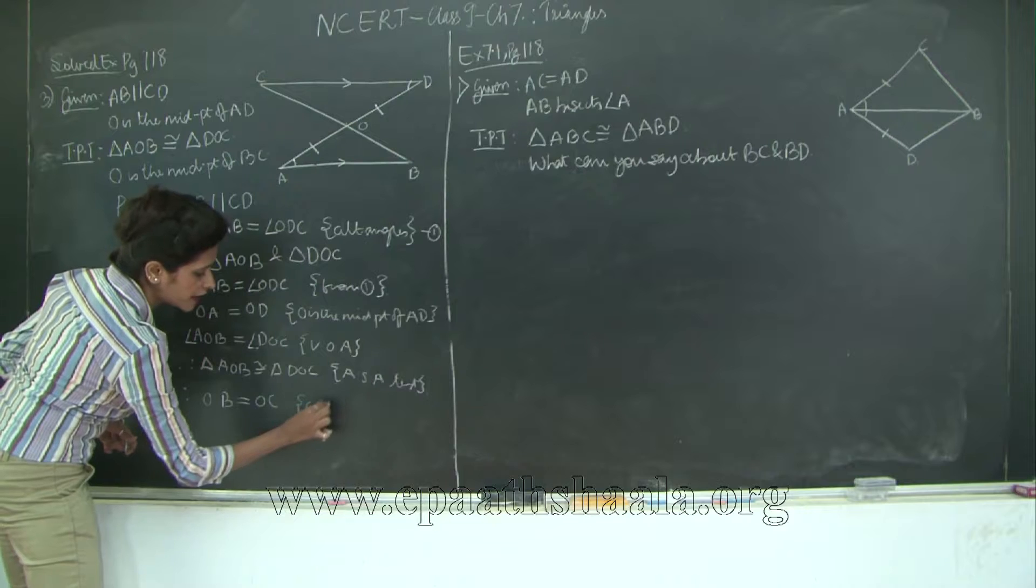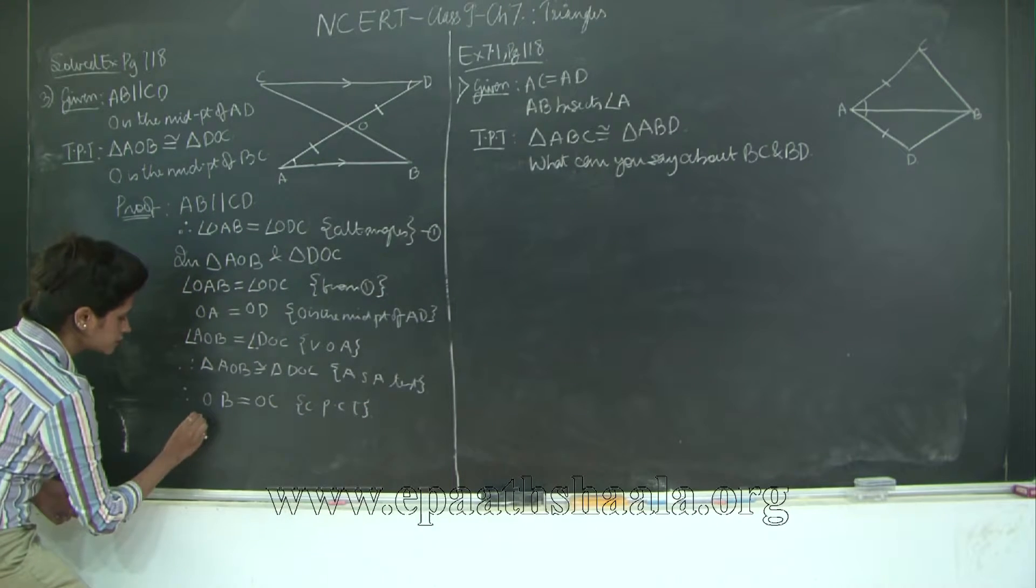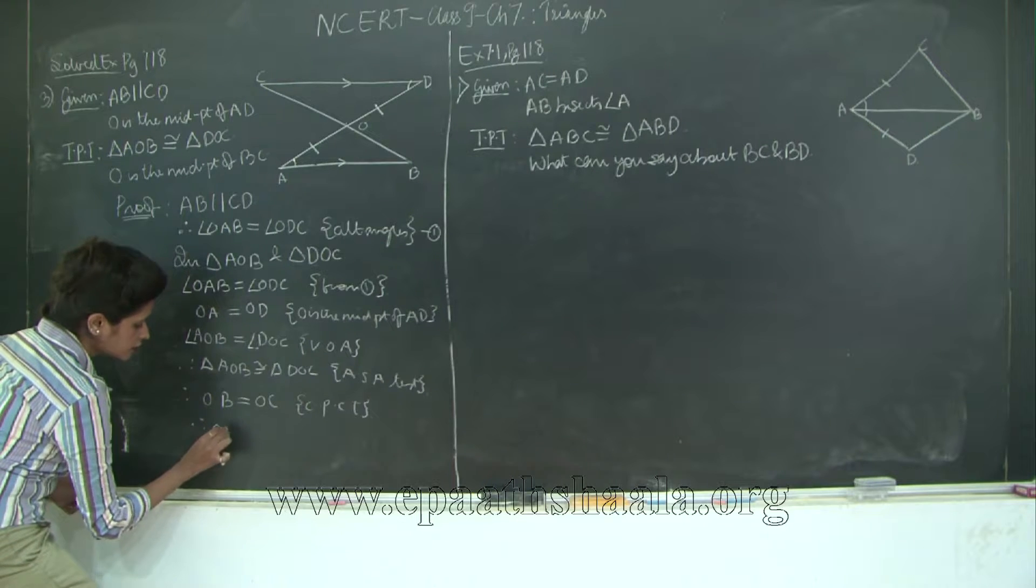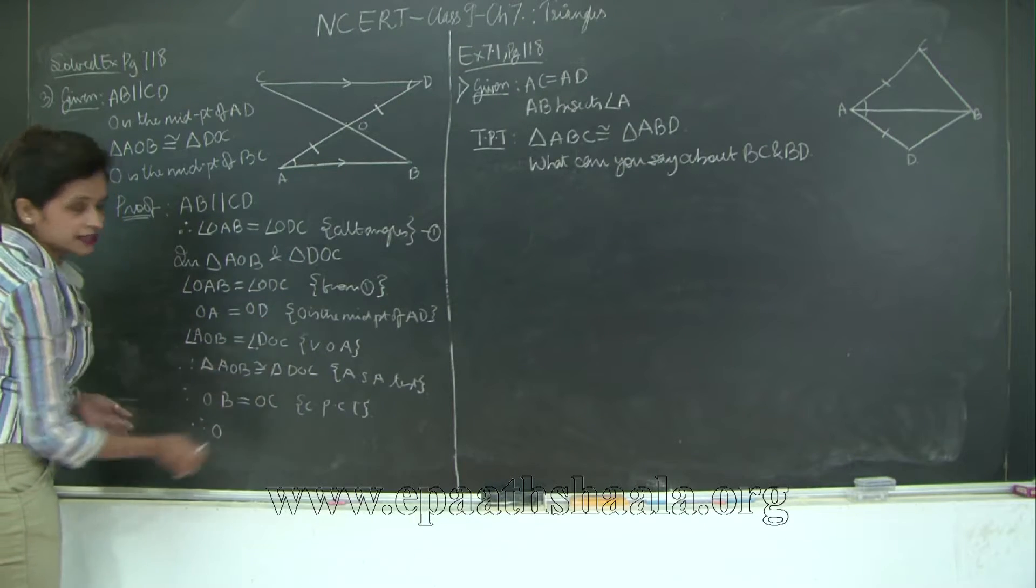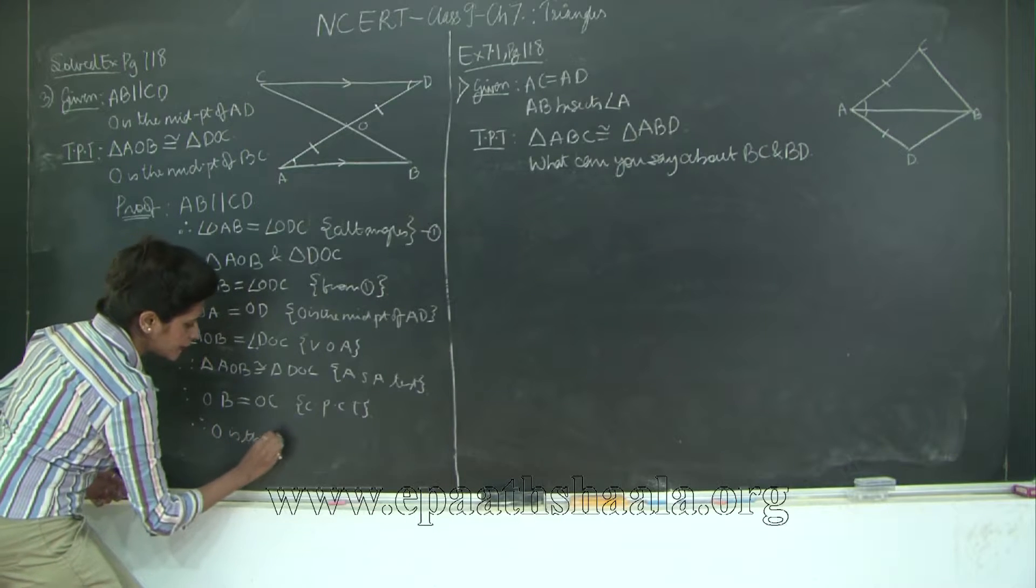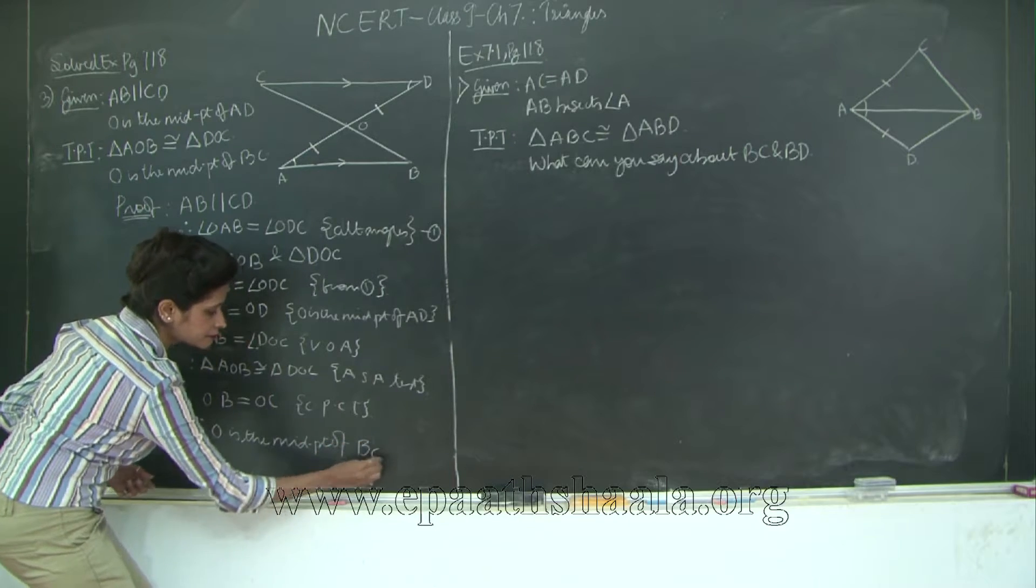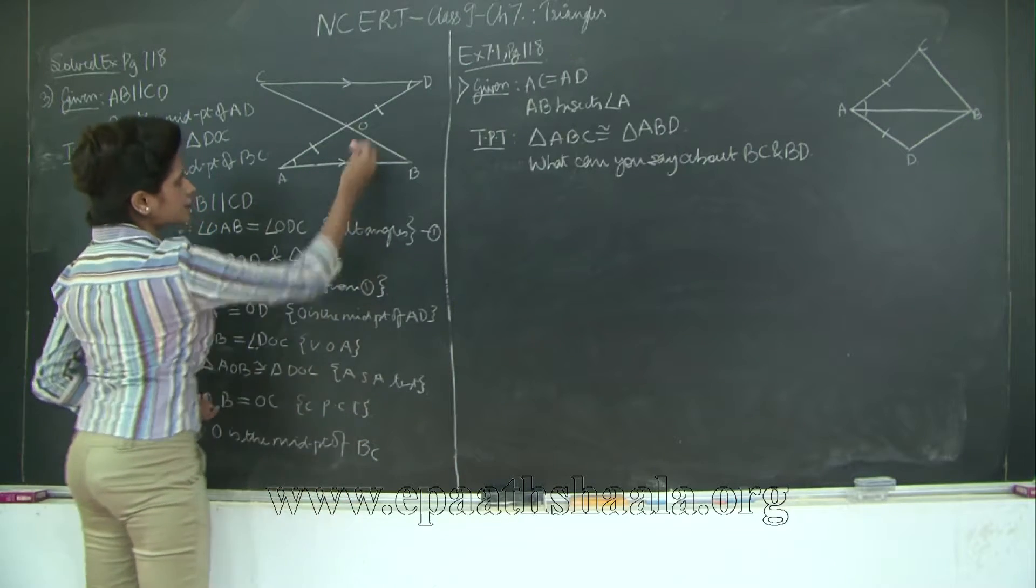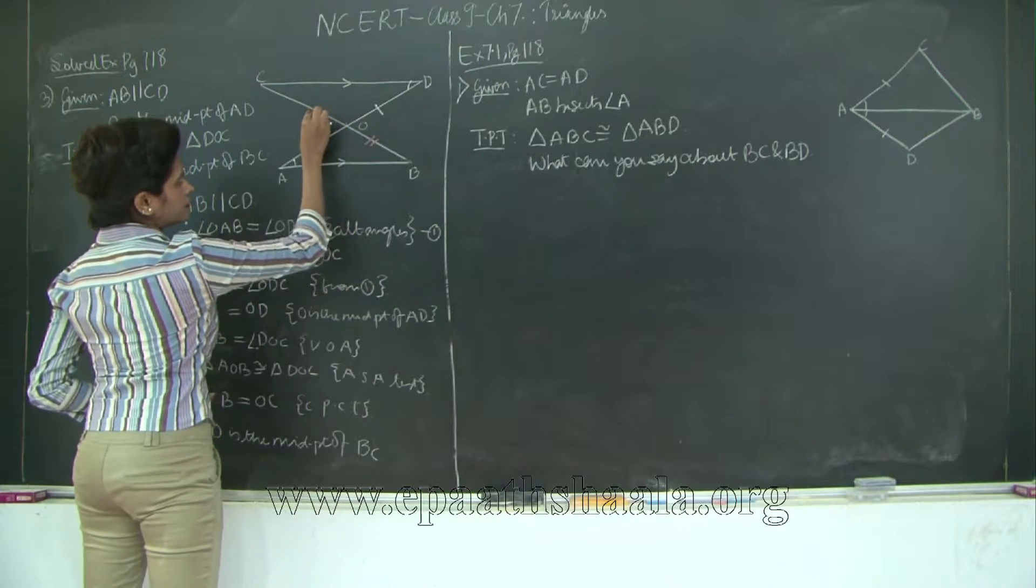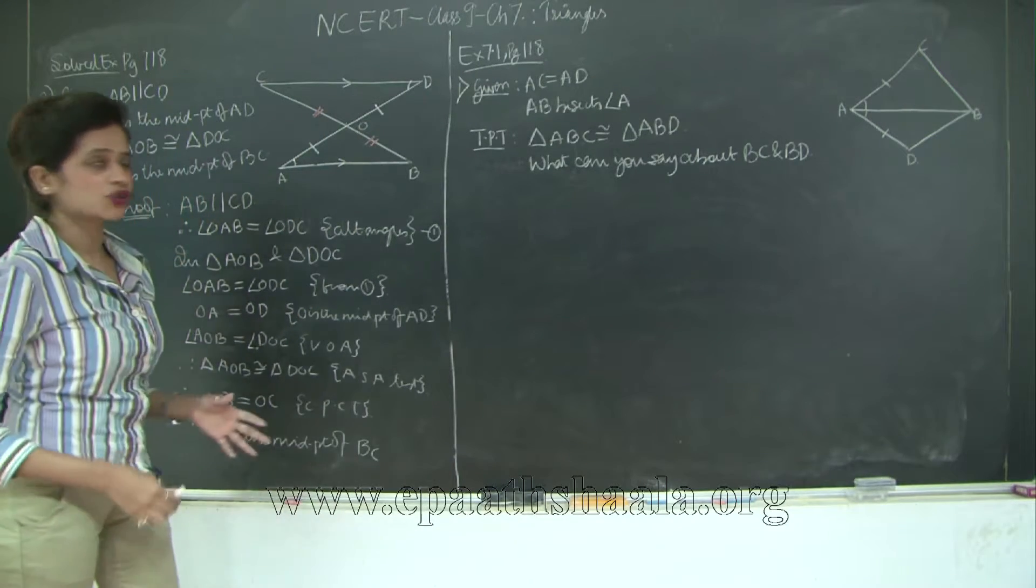Corresponding parts of congruent triangles. Therefore O is dividing BC into equal parts. Therefore O is the midpoint of BC. And we will mark it here. So this winds up the solved example.